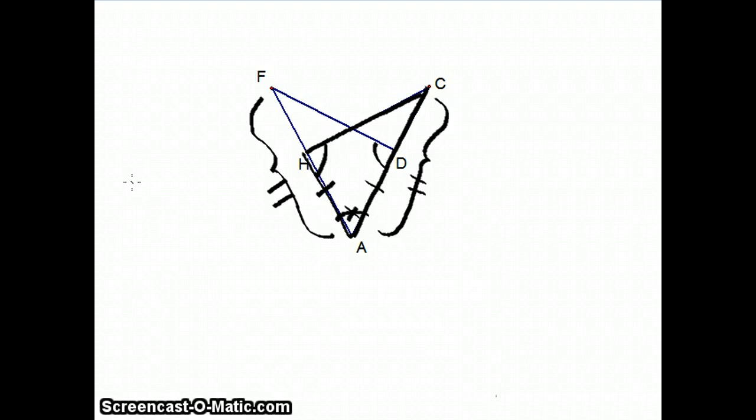Now, Euclid 3.16, book 3, proposition 16, is when he proves that a tangent to a circle from a point on the circle will be perpendicular to the radius at that point. And he's going to use this in book 3, proposition 17. I'm going to show you how he does that.